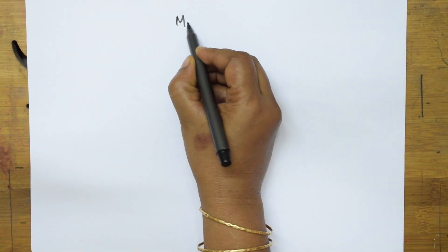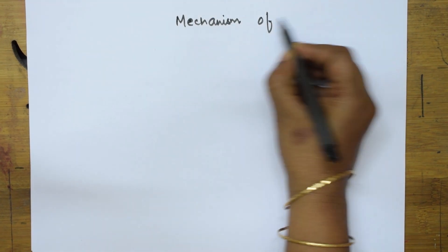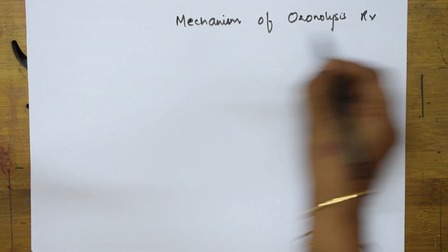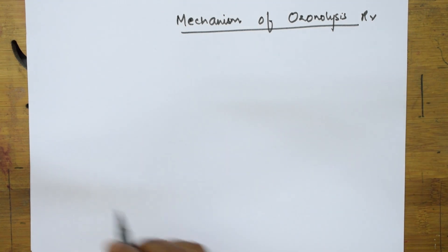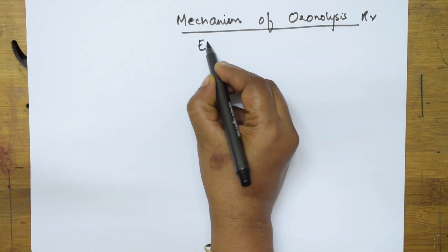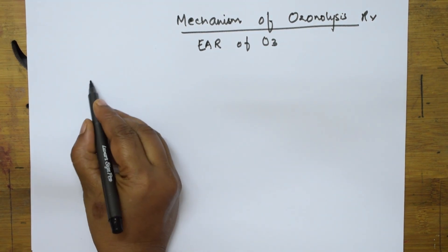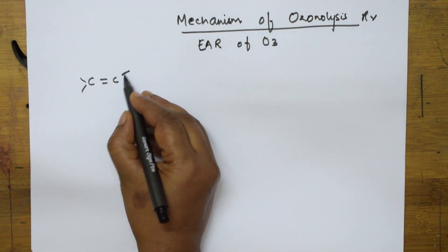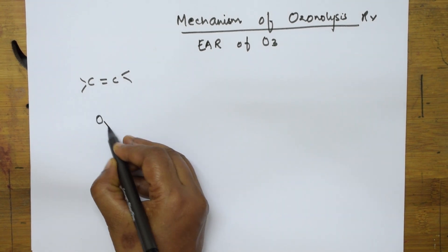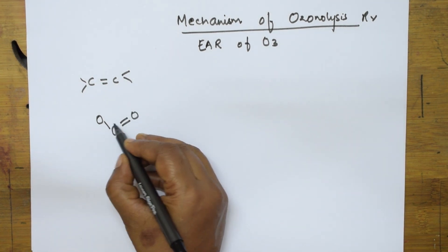This is called electrophilic addition of ozone — EAR, electrophilic addition reactions of O3. Now in the first step, let me take carbon double bond carbon — this is your alkene. Ozone must add to this. The ozone structure is O single bond O double bond O, because it is resonating and keeps resonating.